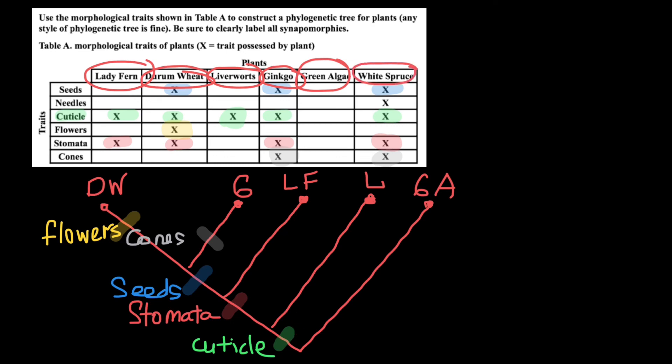So as you see, white spruce we should put here. And WS would stand for this specie. But also this specie has a new trait, which is needles. No any other species has needles. So let's put a bar here, which would specify that this specie developed needles. So let's put needles here. So we finish our phylogenetic tree.